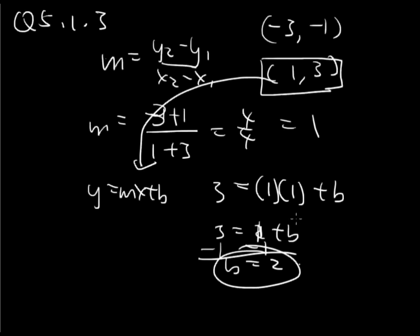And then so we have the slope, and we have the b. So combine them into y equals mx plus b. So we have y equals 1x plus 2. It's our final answer.